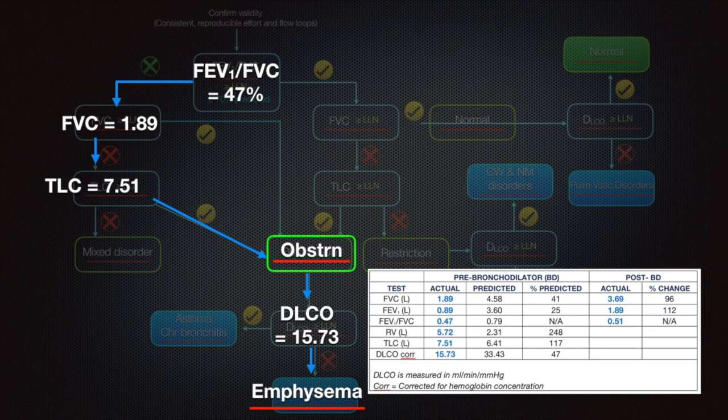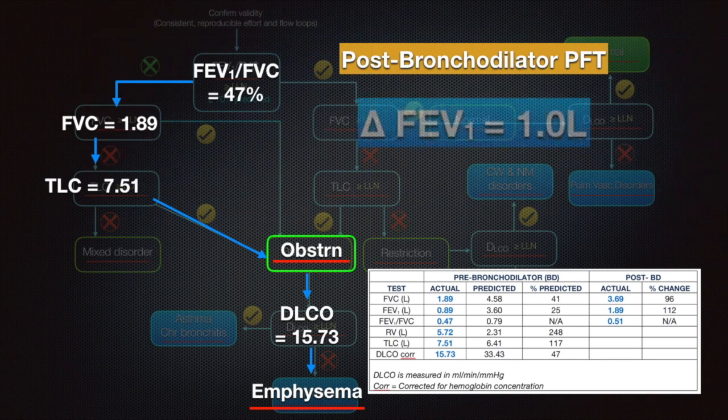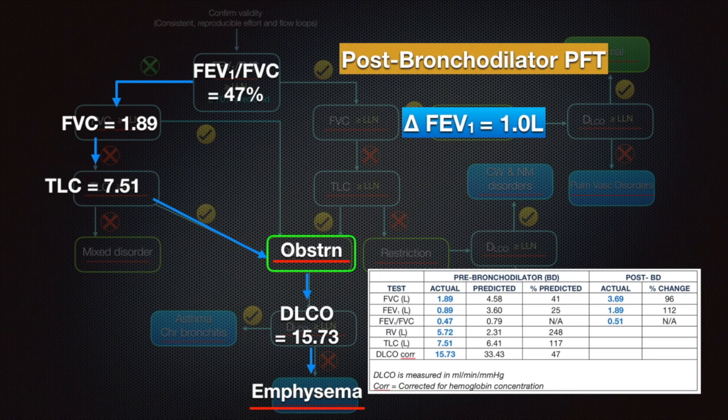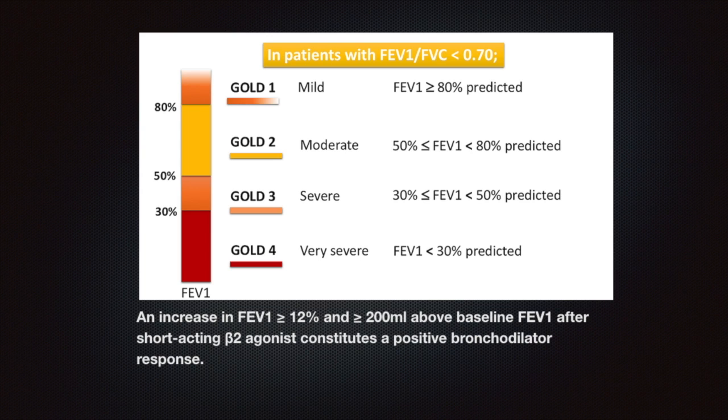So whenever we diagnose an obstructive lung disease, we have to check for reversibility. So you check for the post-bronchodilator PFT. We have been given those values as well. You can check the delta FEV1, or the increment in FEV1, is almost 1 liter or 1000 ml. As per GOLD criteria, an increase in FEV1 more than 12 percent or more than or equal to 200 ml above baseline FEV1 after the bronchodilator nebulization constitutes a positive bronchodilator response or reversibility. It is advised that you go to the website and check the definition grading as per the GOLD criteria and the definition for reversibility following bronchodilator administration.